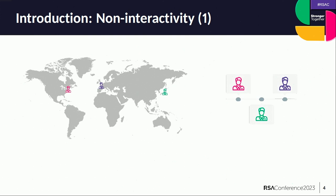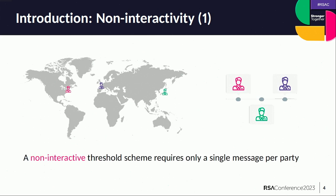Next up is non-interactivity. This is very useful for specific use cases. For this company, it was useful because they want to be very efficient and quick to sign messages. Let's say you have three people who want to sign a message together — one is in New York, one in Paris, one in Tokyo. If you have multiple rounds of interactions required for them to sign something together, that might take multiple business days, which is not good. So a non-interactive threshold scheme requires the players to only send a single message in succession without communicating with each other to generate a signature.